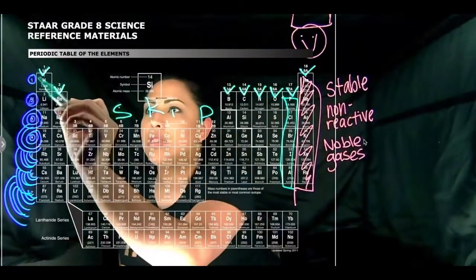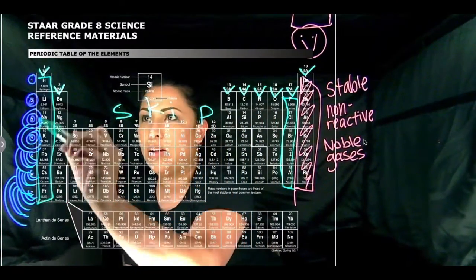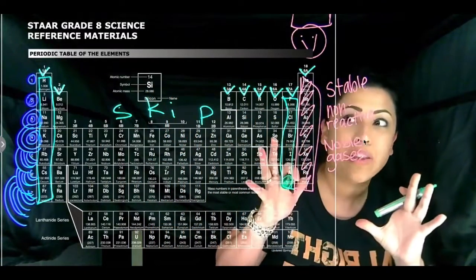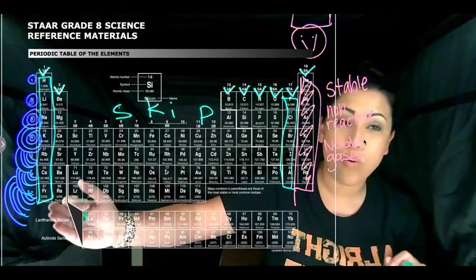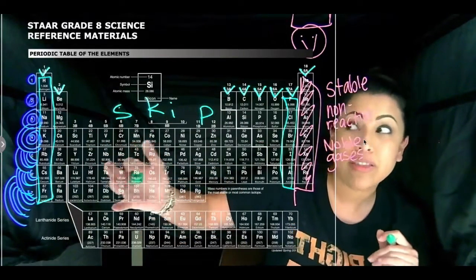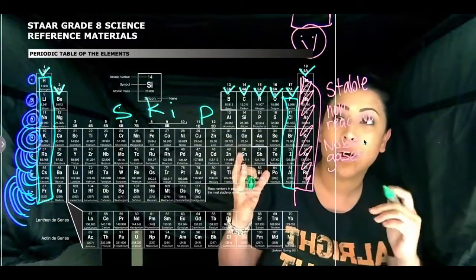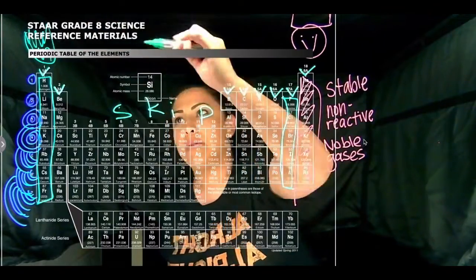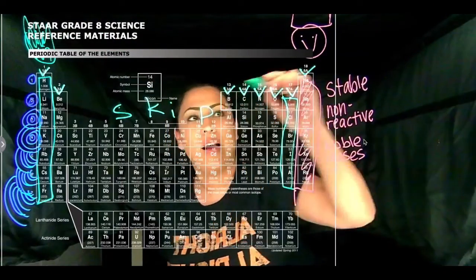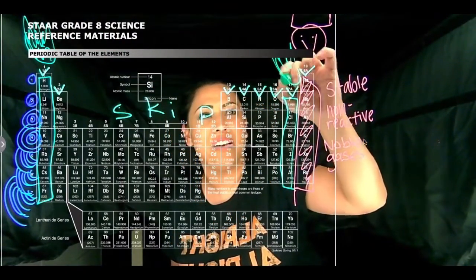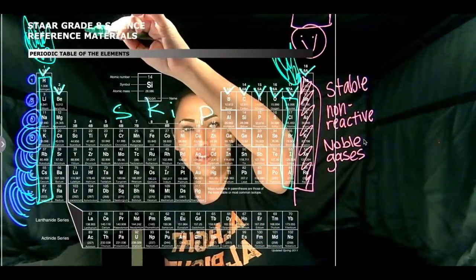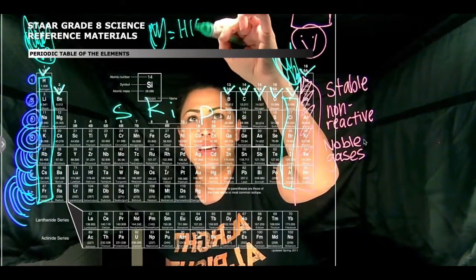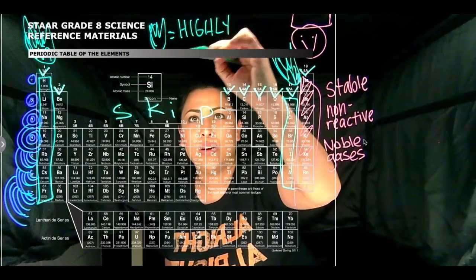So we're going to also highlight that group. Now these are highly reactive. So this means even in group one, if you drop them in water, they will probably cause an explosion. So we're going to draw to make sure we know they're highly reactive. This is my beautiful drawing of fire, in case you didn't know. So I'm going to just draw a key up here. My fire equals highly reactive.